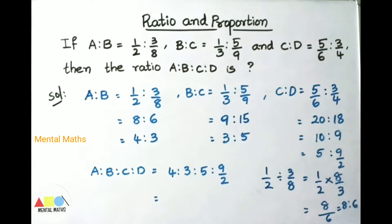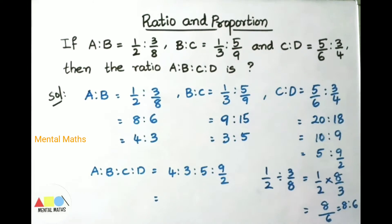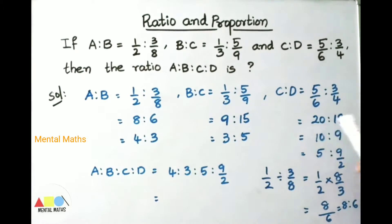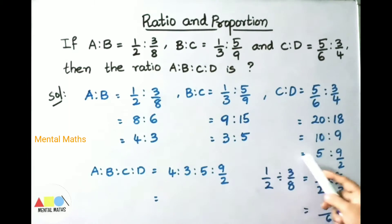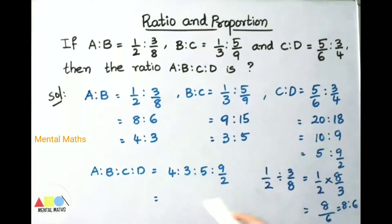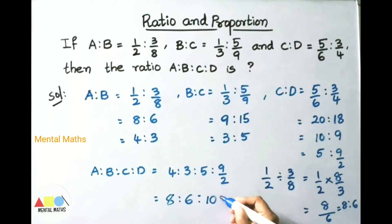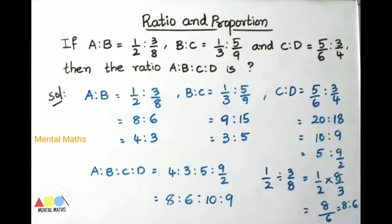Next, C is to D is 5/6 is to 3/4. Cross multiply: 5 fours are 20, 6 threes are 18. Dividing by 2: 10 and 9. Since 9 cannot be divided evenly by 2, C is to D is 5 is to 9/2. Now writing ratio A is to B is to C is to D: since B values match, we write 4 is to 3 is to 5 is to 9/2. To remove the fraction, multiply all terms by 2: 4 twos are 8, 3 twos are 6, 5 twos are 10, and the last term is 9. So A is to B is to C is to D is 8 is to 6 is to 10 is to 9.